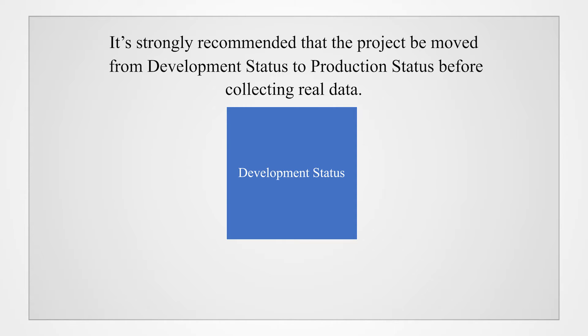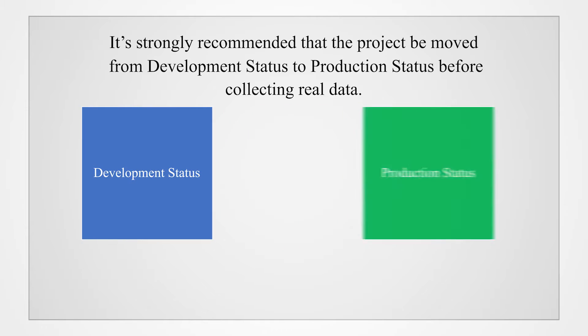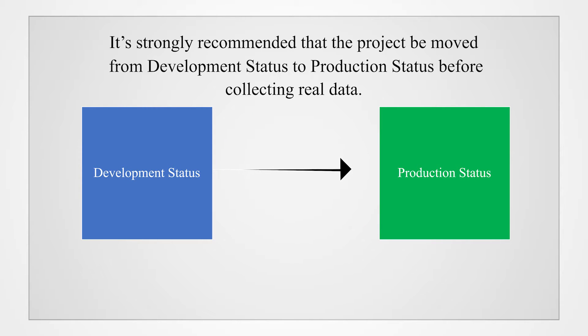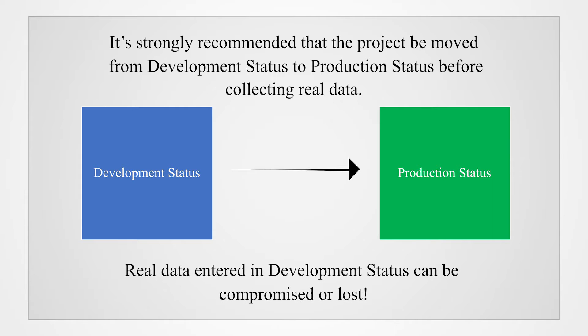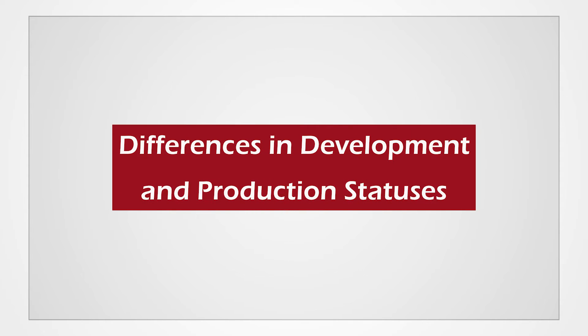All REDCap projects start in development status, where users build and test projects. After a project is developed and you have made sure the branching logic is working correctly, it's strongly recommended that you move the project from development status to production status before collecting real data. Real data refers to true data entered by or collected from survey respondents. Real data entered in development status can be compromised or lost if the REDCap user is not careful.